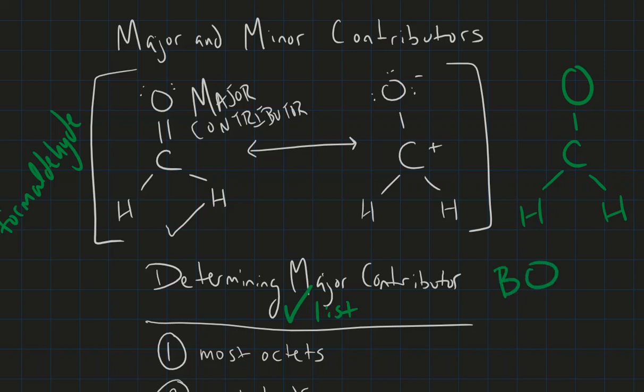Bond order is a way of determining how many bonds are actually seen in the resonance hybrid. And what we do is add up all of the bonds that we see for this particular area, and then divide it by how many resonance structures there are. So we're trying to figure out the bond order for this right here. We see that in our first resonance structure, our major contributor has two bonds. And then we see in our second, it has one bond. And then we divide it by how many resonance structures there are. There are two.